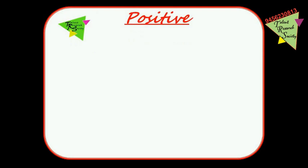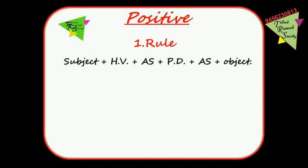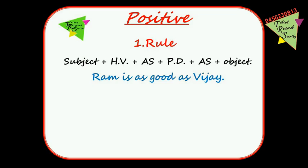Positive degree can generally be formed using four types of rules. Rule 1: Subject + helping word + as + positive degree + as + subject. For example, 'Ram is as good as Vijay.' In the first rule, 'as...as' comes before and after the positive degree.